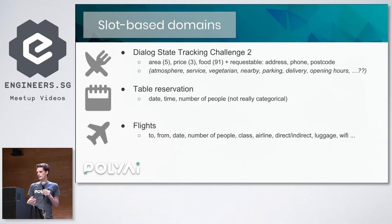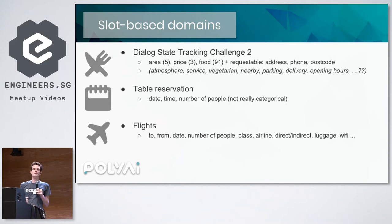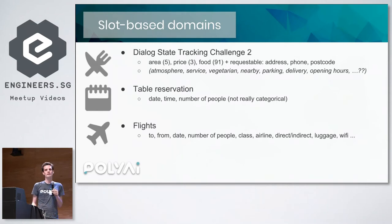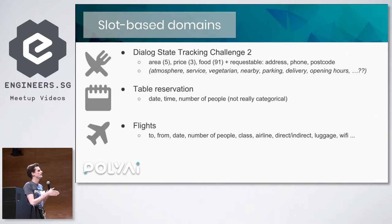I'll come back to that topic later. Table reservation is maybe a more obvious slot-value domain, where you need to constrain the date, the time, and the number of people. There, the values aren't really categorical — there's a whole different range of times and a whole different range of ways to refer to those times. Flights is another example that might be slot-value based — we need to query a database at some point to see if there is a flight from this airport to this airport on this particular date.